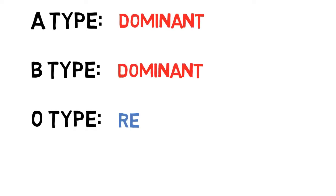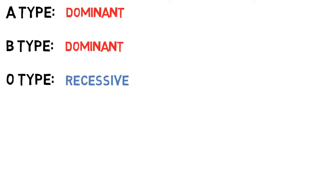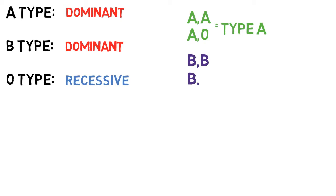This means that when you receive an A and an O, or a B and an O from your parents, the O type will not determine the blood type. So those with AA and AO blood types are simply referred to as having A type blood. Likewise, those with BB or BO types are simply B type blood.